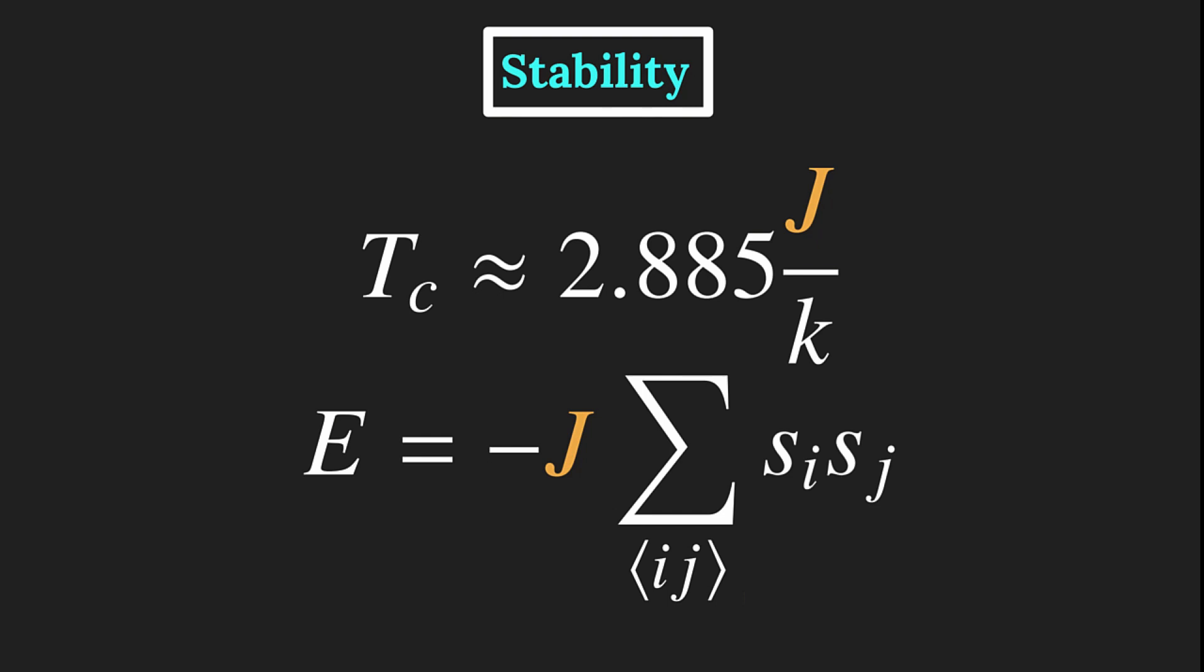This means that for large J, the spins will lock each other in place, which agrees with the critical temperature, then being much higher, since we would need much stronger thermal fluctuations to disturb the ordered configuration.